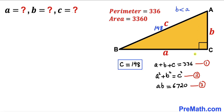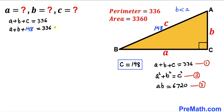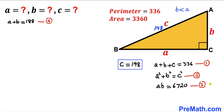Going back to equation one, we now substitute c equals 148. Subtracting 148 from both sides, we find that a plus b equals 188. Let me call this equation number four.